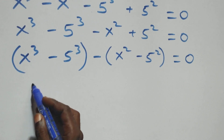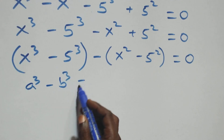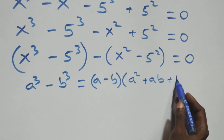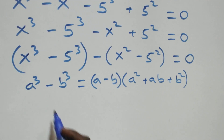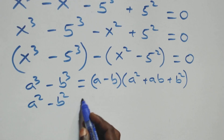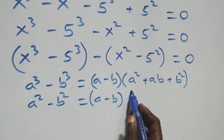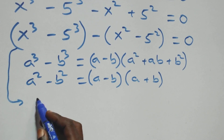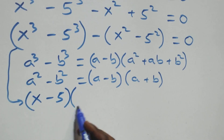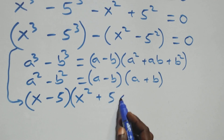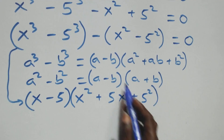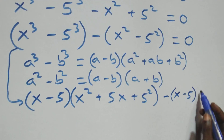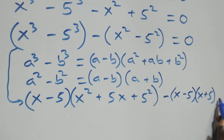This first bracket uses the identity a cubed minus b cubed equals (a minus b)(a squared plus ab plus b squared). The second bracket uses a squared minus b squared equals (a minus b)(a plus b). Applying these, we get (x minus 5)(x squared plus 5x plus 5 squared) minus (x minus 5)(x plus 5) equals zero.